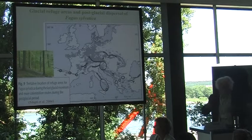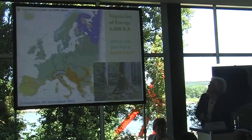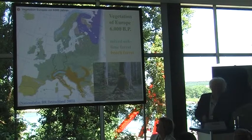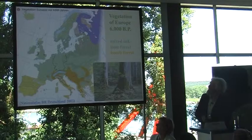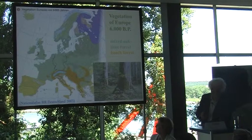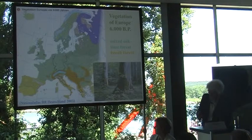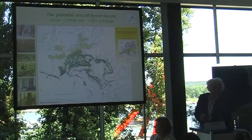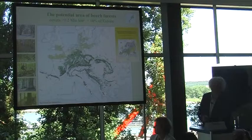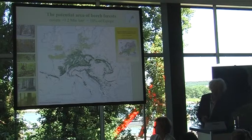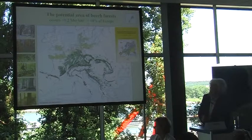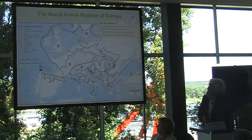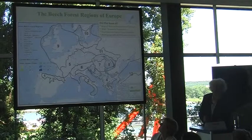Beech survived the Pleistocene in refuge areas in southern Europe and spread from those refuge areas across large parts of the continent. Before the expansion of Fagus, large parts of Europe were already covered by lime-mixed forests — shown in dark green on this map — with brown indicating the beech area 6,000 years ago. Today the situation is completely changed: lime-mixed forests remain only in continental parts of the temperate zone, while western and central parts would naturally be covered by beech forests in different altitudinal belts.